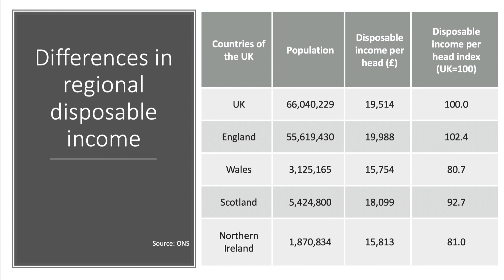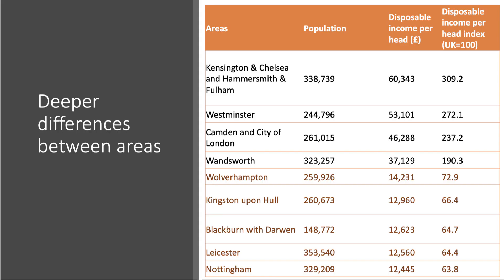Taking another level below by area, we see quite stark differences between localities in the UK. In Kensington and Chelsea and Hammersmith and Fulham, disposable income per head is over £60,000 — more than three times the UK average. Whereas in places like Wolverhampton, Hull, Blackburn, Leicester, and Nottingham, disposable income is well below the UK average. In Nottingham, the figure is just over £12,000 per head — less than two-thirds of the UK average. Even within those areas there are often very large differences in disposable income, representing a key aspect of inequality.